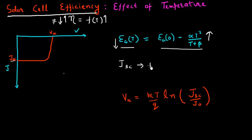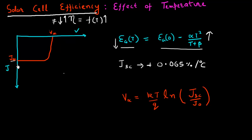JSC approximately increases by 0.065% for each degree centigrade increase in temperature. So if I increase my temperature — let's say the red curve is for T = 25°C — when I increase the temperature by 10°C, my JSC would increase by approximately 0.65%. I'll draw this JSC as a white line, which would closely follow but be slightly higher than my red line.